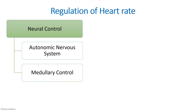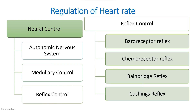Next is reflex control of heart rate. The reflexes that should be included in your answer are the baroreceptor reflex, the chemoreceptor reflex, the Bainbridge reflex, and the Cushing's reflex. These headings should be present when you write about reflex control of heart rate.